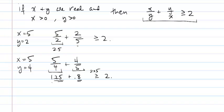Now, it's still not clear to me why it's always going to be the case that no matter which two real numbers I choose, these two ratios are going to sum to a value that's at least 2. So what I'm going to do is go back to the original inequality that I'm trying to prove.